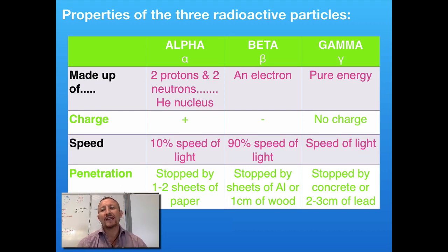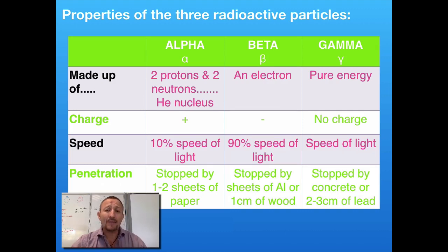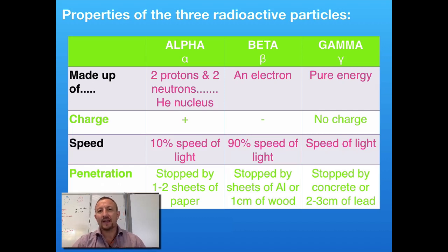Finally, we've got gamma. Gamma is pure energy, so there is no charge present on the gamma particle. Travelling at the speed of light, we find it at the far right-hand side of the electromagnetic spectrum. It basically isn't a particle as such because it's in the form of energy, and it can be stopped by thick layers of concrete or lead.